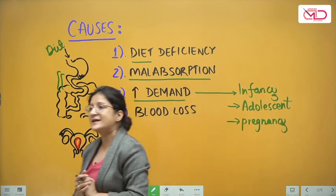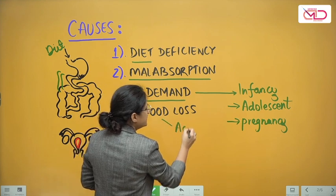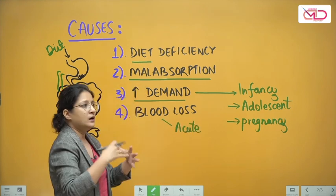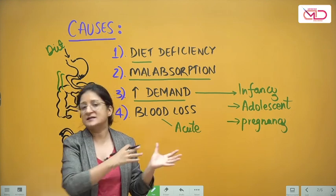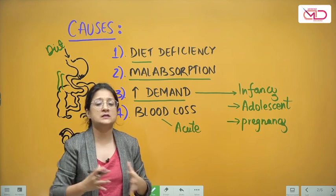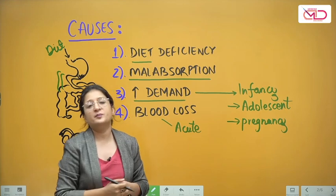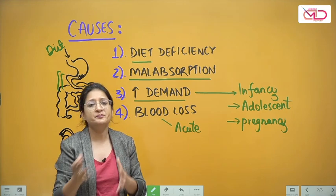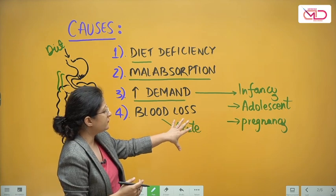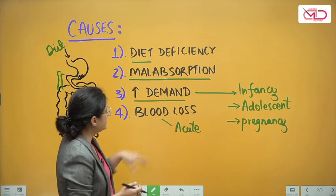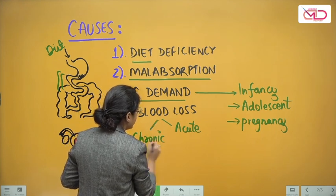Another major cause is blood loss. Blood loss leading to anemia can be acute — such as trauma or an accident leading to hypovolemic shock with considerable blood loss, causing sudden acute anemia and hypoxia treated with blood transfusion. The other sort is chronic blood loss that perpetuates over a period of time.